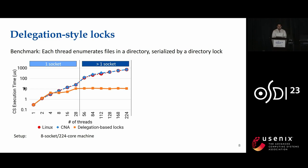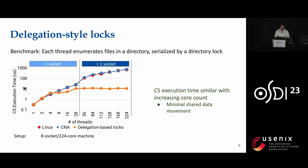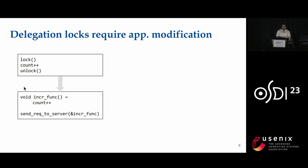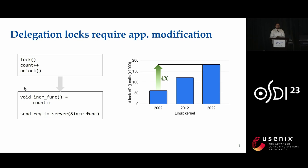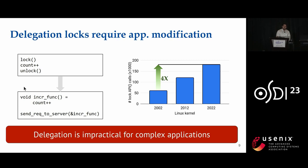This figure shows the time spent in the critical section for traditional and delegation-style lock designs. For delegation-based locks, the time spent executing the critical section remains similar irrespective of the number of threads, because of minimal shared data movement. However, existing delegation-style locks require application modification — specifically, the critical section must be wrapped as a function and a function pointer sent to the server core for execution. This is hard to do for highly concurrent applications like the Linux kernel, which has thousands of locks. Hence, existing delegation-based lock design is not practical for large and complex applications.